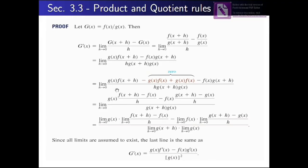To proceed, we add and subtract the term g(x)·f(x) in the numerator — adding zero — so we introduce minus g(x)·f(x) plus g(x)·f(x). We then group: between the first and second terms, we factor out g(x), leaving f(x+h) minus f(x). Then we take g(x) as common factor, leaving f(x) divided by h.